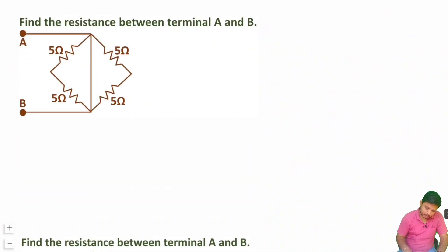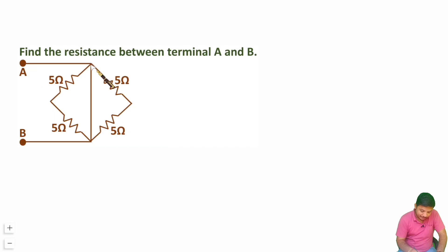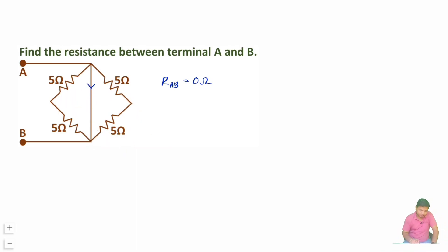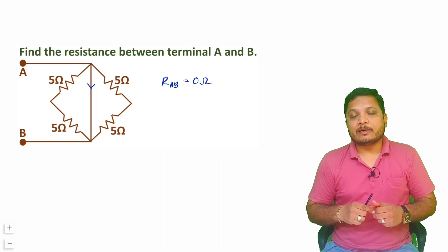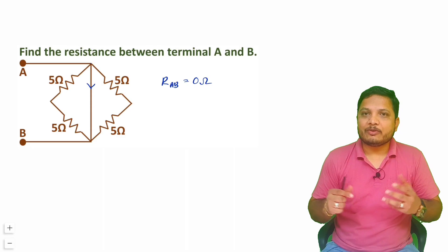In the second question, we need to find the equivalent resistance between A and B. If you look carefully, there is a direct wire shorted between A and B, which shorts the entire circuit. All current flows through that wire, so the resistance between A and B is zero. Sometimes this type of simple question appears in entrance exams and students think there must be a trick, but no calculation is needed here.